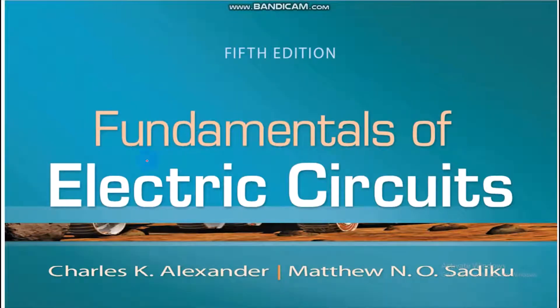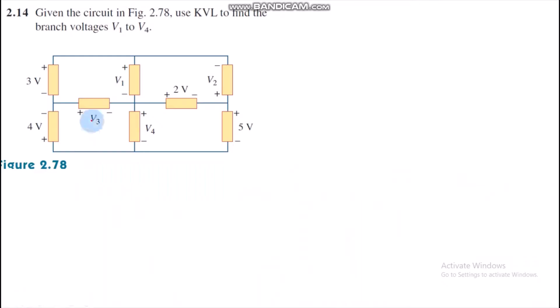Hello everyone, today we are going to solve question number 2.14 from Fundamentals of Electric Circuits by Alexander and Sadiku. The question is to find V1 to V4 from the given circuit, and we have to use KVL.